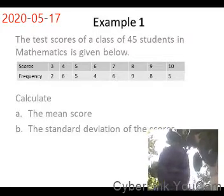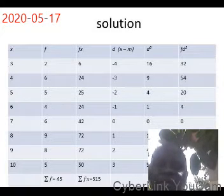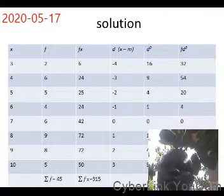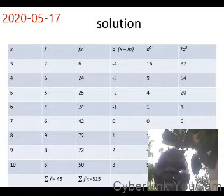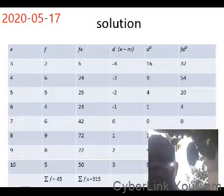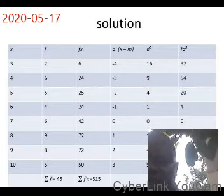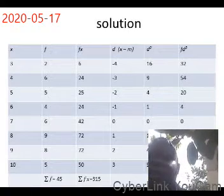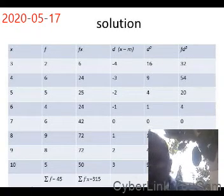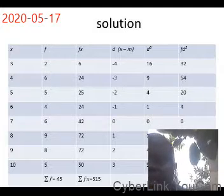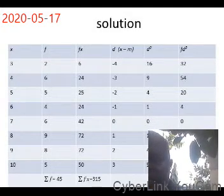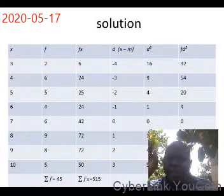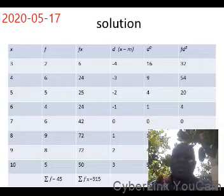The steps in calculating standard deviation are: one, calculate the mean; two, find the deviation of each number from the mean; three, square the deviation; four, obtain the mean of the squared deviations; five, find the positive square root of the value obtained in step four. Now let us look at this frequency table. The first column is the score X: 3, 4, 5, 6, 7, 8, 9, and 10. The frequency — number of students scoring each value — is: 2, 6, 5, 7, 6, 9, 8, and 5.